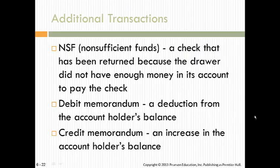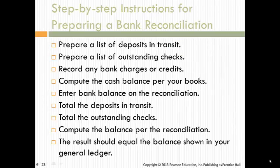An NSF is a non-sufficient fund — a check returned because the drawer did not have enough money to pay it. A debit memorandum is a deduction from the account holder's balance; a credit memorandum is an increase. Some people might see these as ACHs or EFTs. The step-by-step reconciliation process involves: preparing a list of deposits in transit, a list of outstanding checks, recording any bank charges or credits, computing the cash balance per your books, entering the bank balance on the reconciliation, totaling deposits in transit, totaling outstanding checks, and calculating the balance per the reconciliation — which should equal the balance on your general ledger.